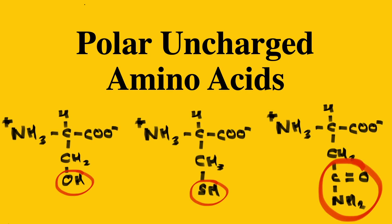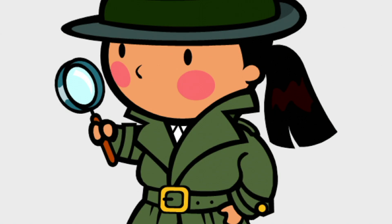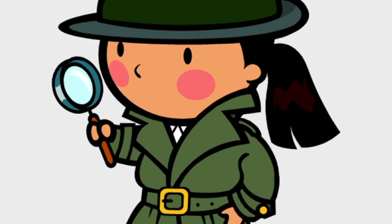Hi everyone, welcome back. Today's video will be about polar uncharged amino acids. Five of the 20 amino acids fall under this category: they include serine, threonine, cysteine, asparagine, and glutamine. The acronym I used to remember this is STICNIC — the acronym is made of the one-letter abbreviations used to identify each of the amino acids.